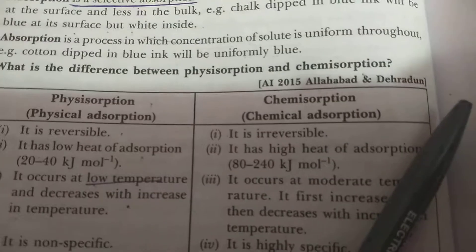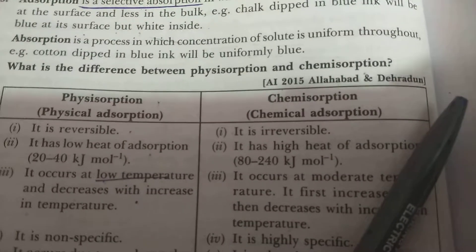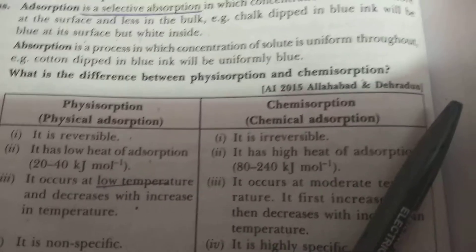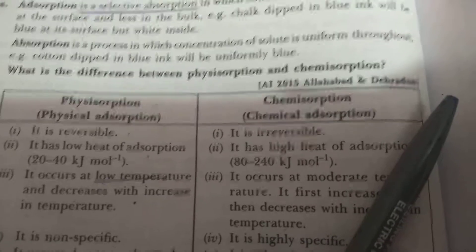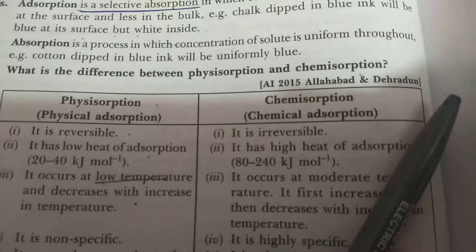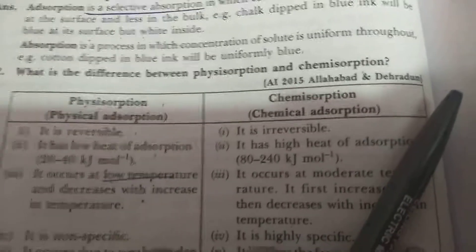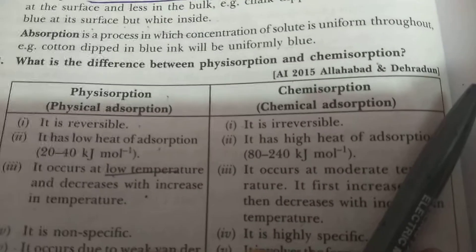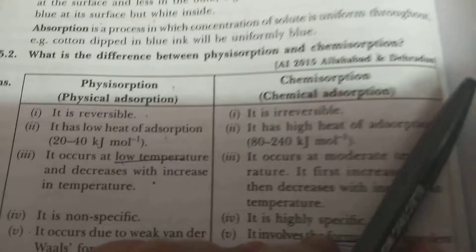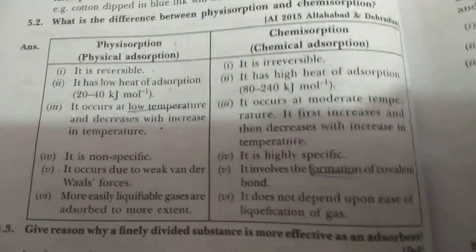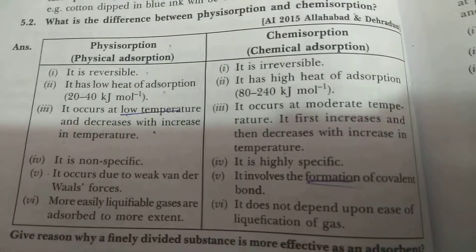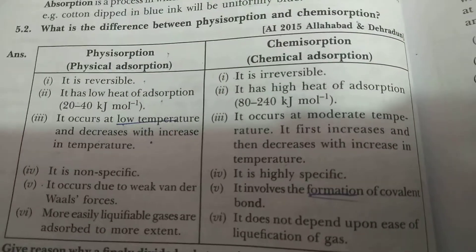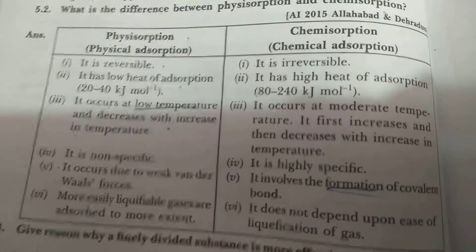Absorption is a process in which the concentration of solute is uniform throughout. Example: cotton dipped in blue ink will be uniformly blue. This is very important to remember.